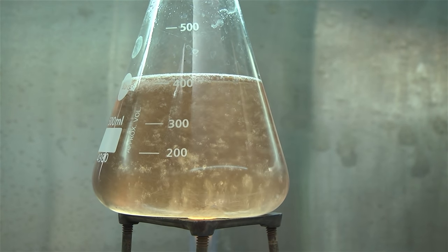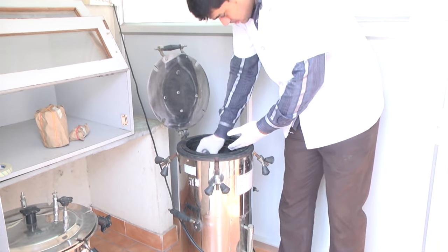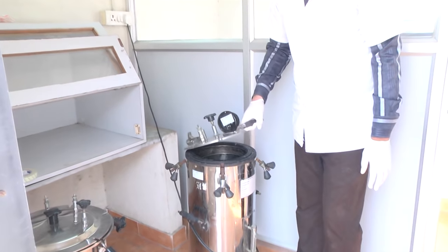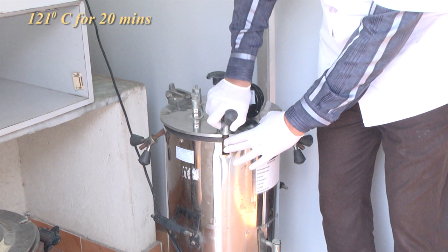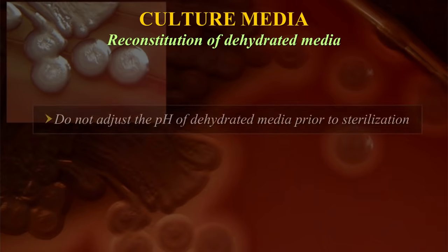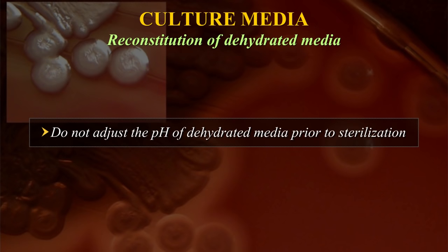Bring the medium to a boil without burning. Most culture media will require final sterilization in an autoclave at 121 degrees centigrade for 20 minutes, but it is important to follow the manufacturer's instructions as it may vary for different media. Do not adjust the pH of dehydrated media prior to sterilization. The pH of the dehydrated media is adjusted by the manufacturer so that after the medium is prepared, the pH of the prepared medium matches with the label specifications.